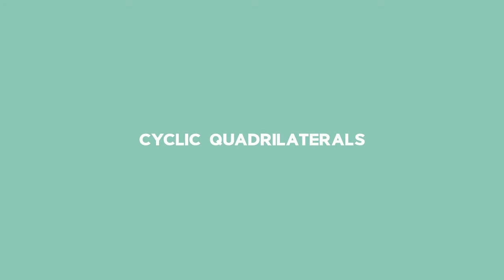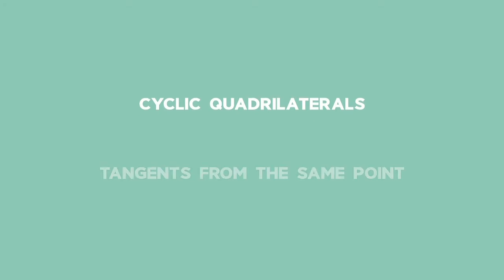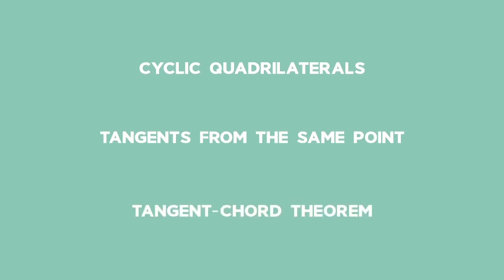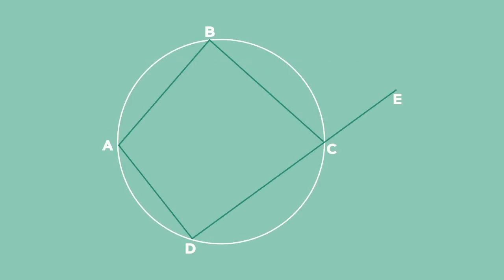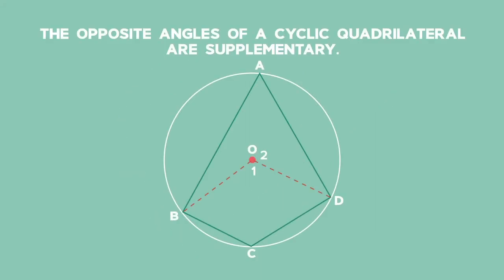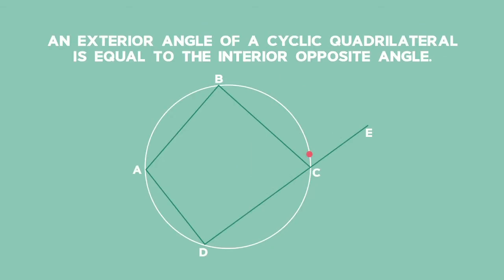Cyclic quadrilaterals. All four vertices of a cyclic quadrilateral lie on the same circle. So ABCD is a cyclic quadrilateral. The opposite angles of a cyclic quadrilateral are supplementary. An exterior angle of a cyclic quadrilateral is equal to the interior opposite angle.